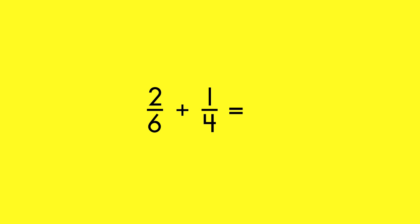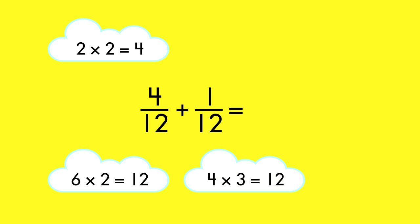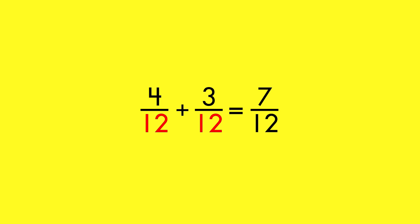In order to add fractions, they must have the same denominator. Create an equivalent fraction for each fraction in the addition problem so that both fractions have a common denominator. Finally, add the numerators. The denominator stays the same.